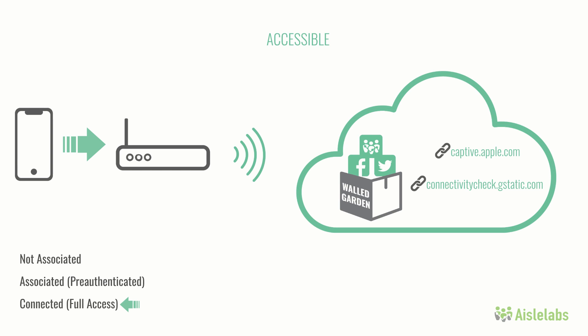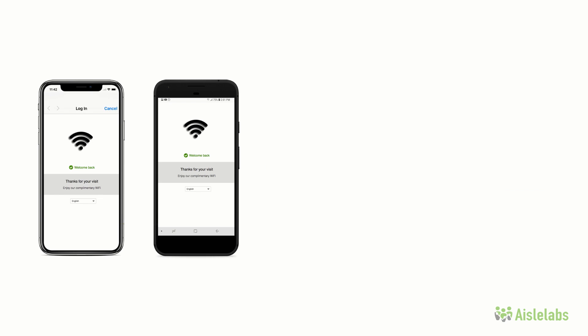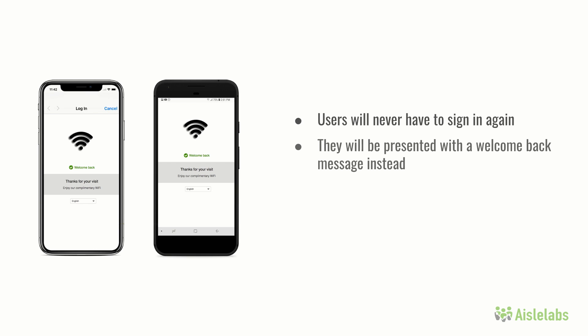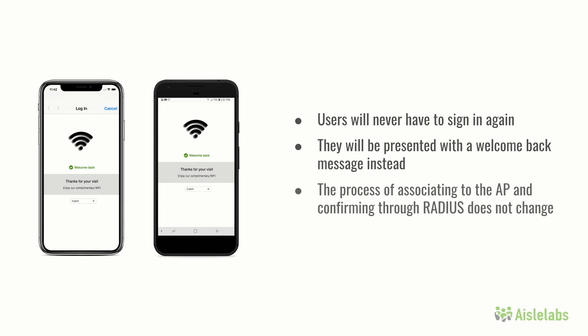Note that apps requiring internet usage, such as chat apps, may not work until the captive portal authorization process is completed. With Connect, a user will never have to go through the splash page process again and instead will be presented with a welcome back screen. However, the authentication process itself does not change and each time a phone associates to the AP, it will still go through the same steps to confirm access through RADIUS.